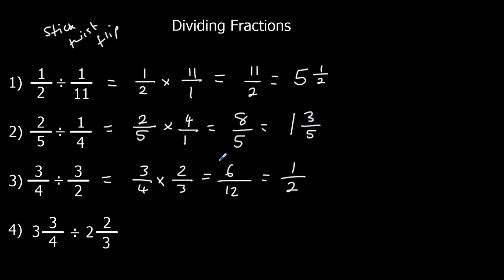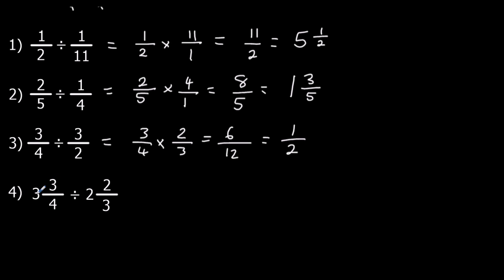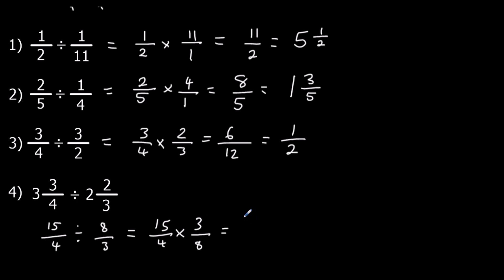And finally here, I've got to change it to top-heavy first. 3 times 4 is 12, plus 3 is 15. And 2 times 3 is 6, plus another 2 is 8. Now I'm going to change it to a times — flip over the second one. 15 times 3 is 45, and 4 times 8 is 32. They're not in the same times table. I'll change it to a mixed number — I've got 1 whole one and 13 left over, so 1 whole one and 13 out of 32.